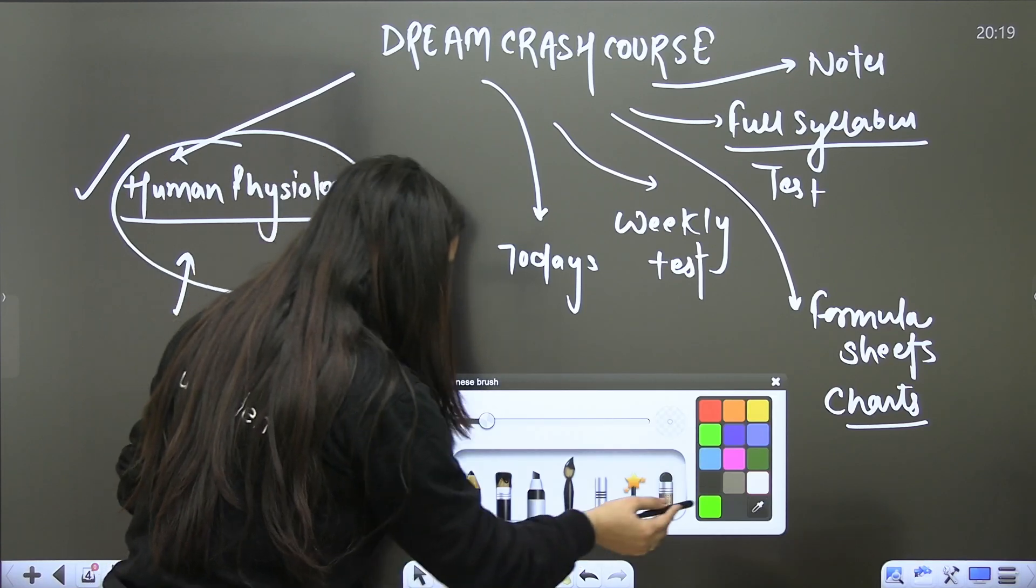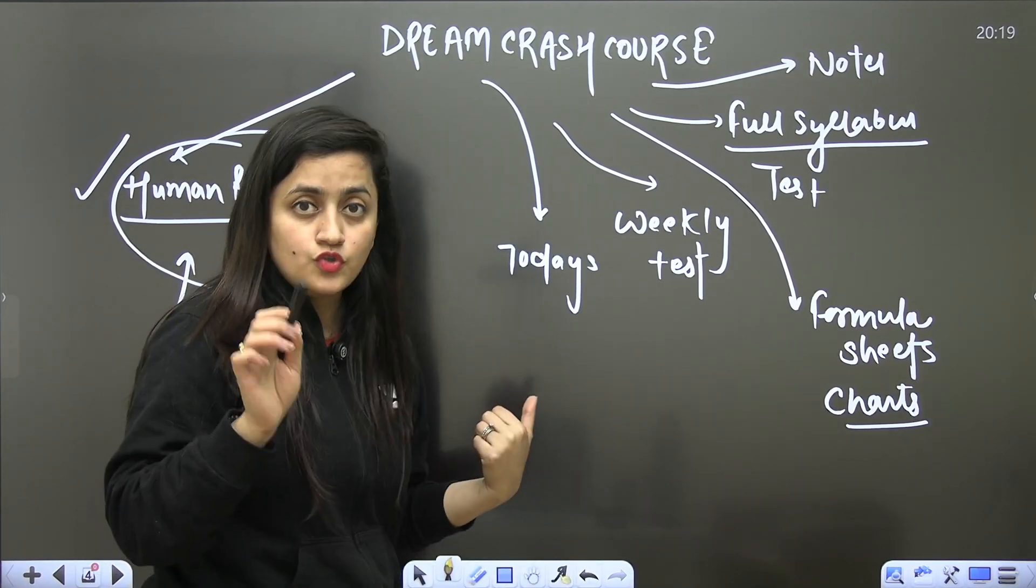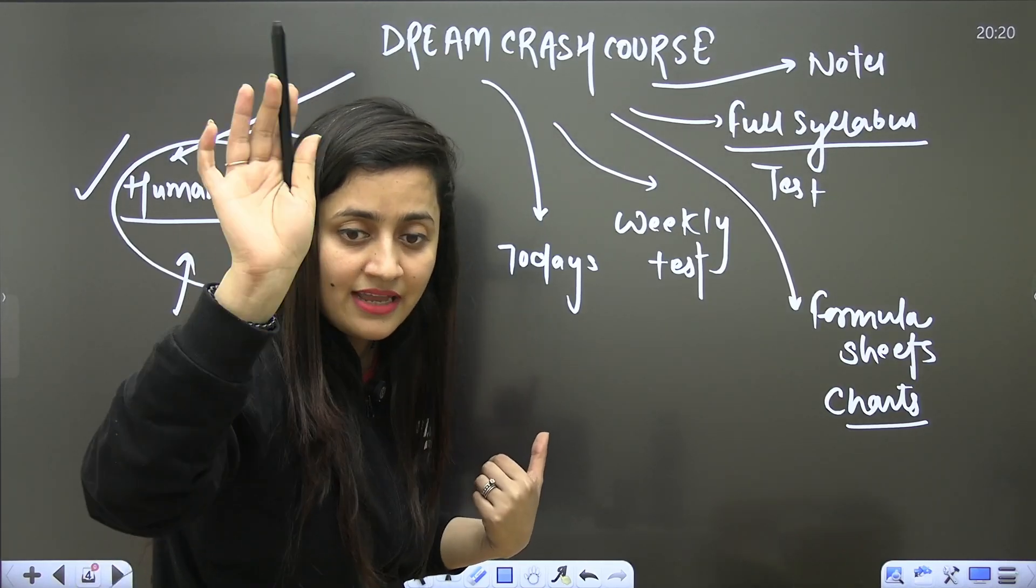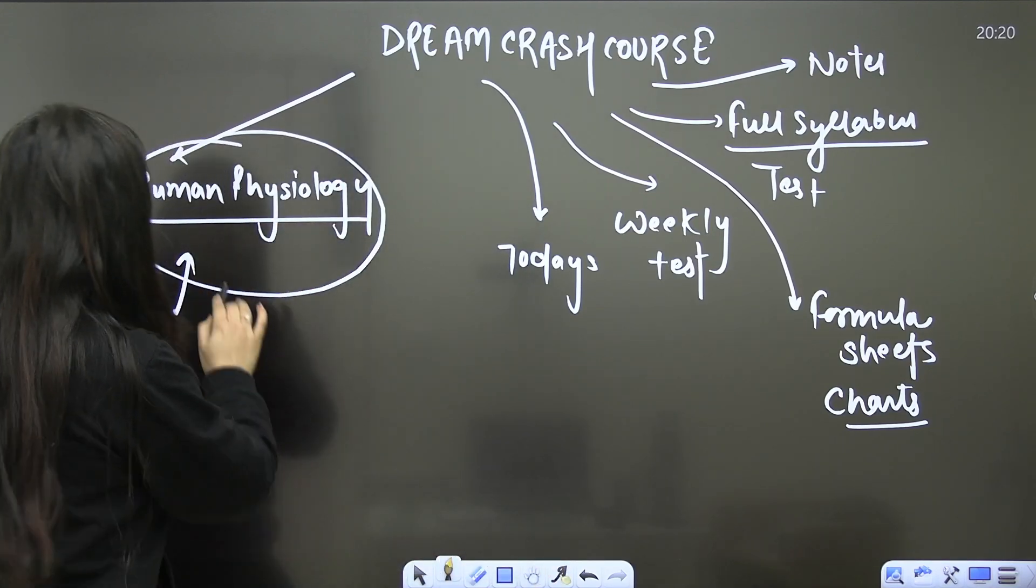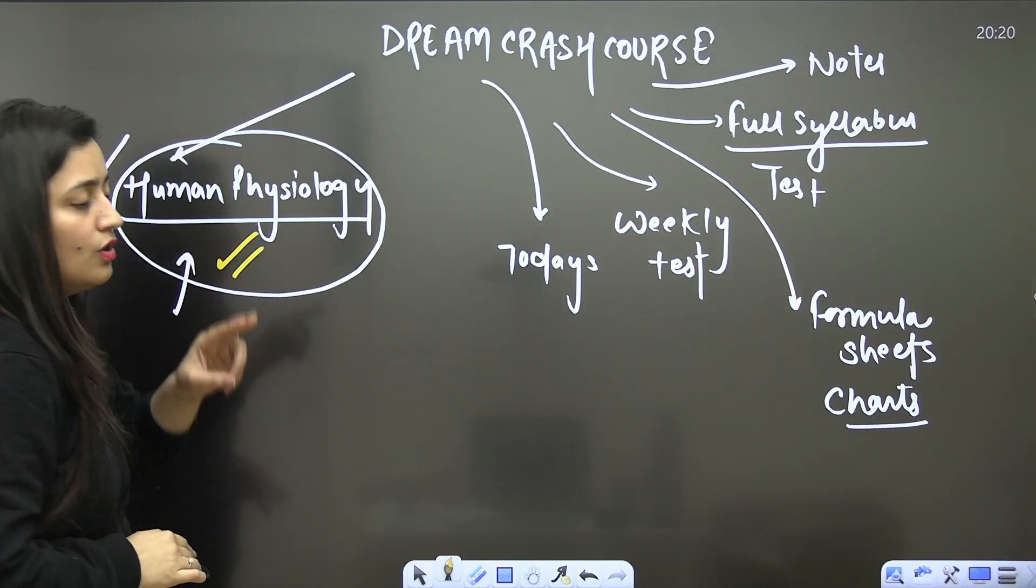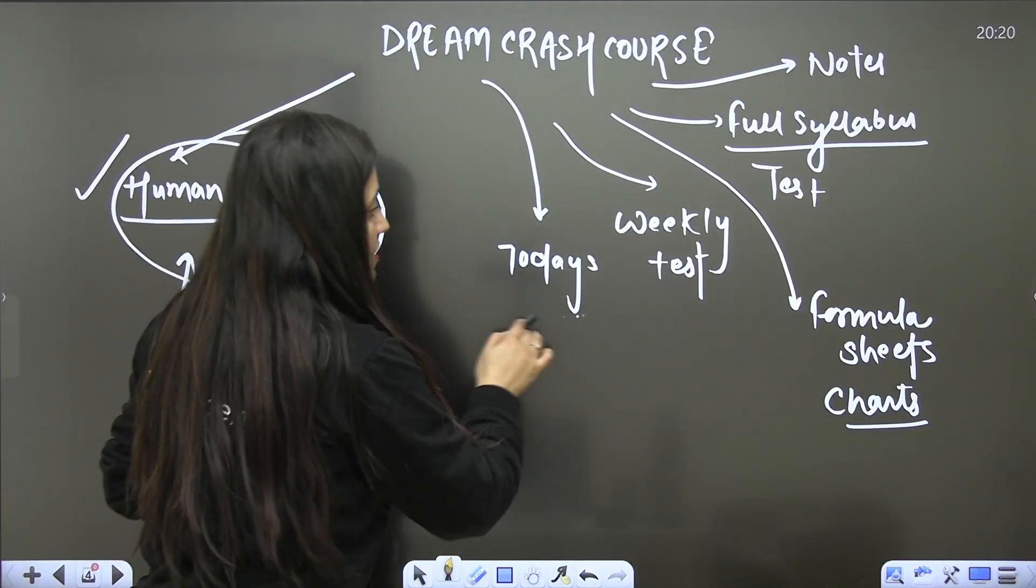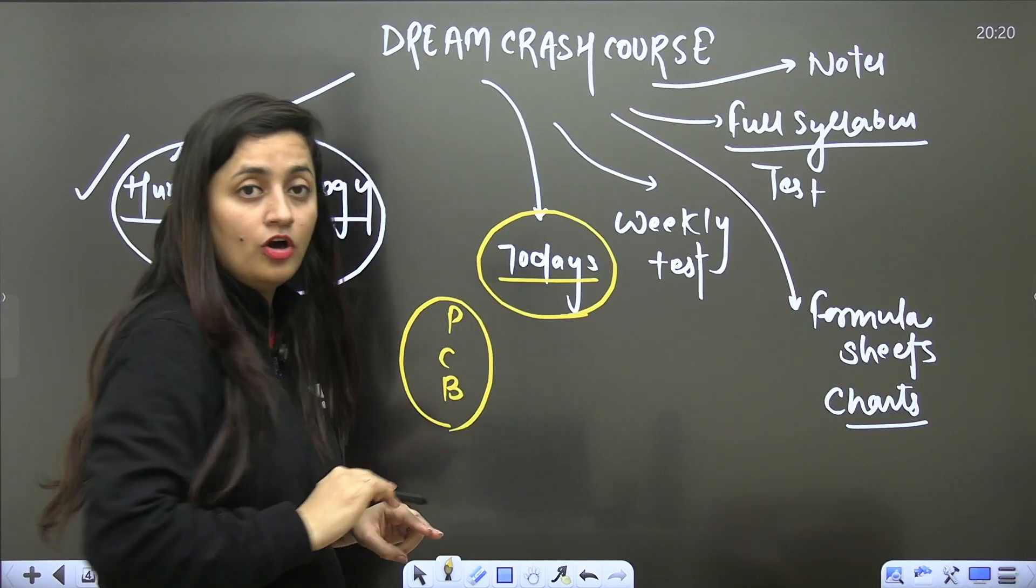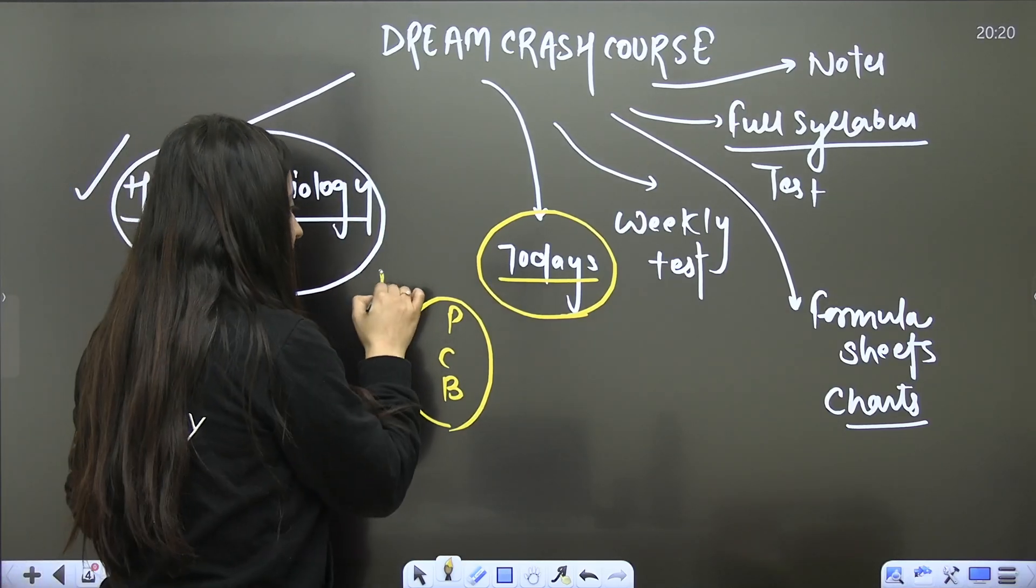So if you talk about biology, I will start with the human physiology because I will finish the most scoring chapters first, so that you will get the time for the revision as well. So without any delay, join the batch. In the description box of this video, there is a link. Kindly click on that and be the part of this particular batch. And let's start the human physiology from 6th of February, guys.